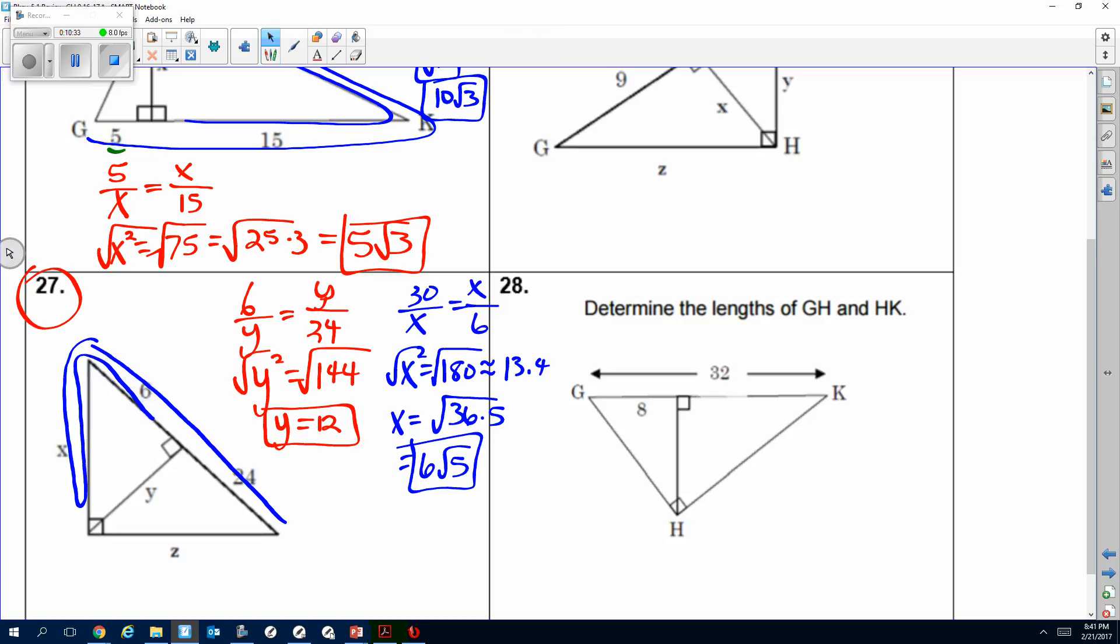All right, so on 28, since they want you to find the length of GH, GH is here, so I'm gonna put x there. So we're gonna do boomerang for that.